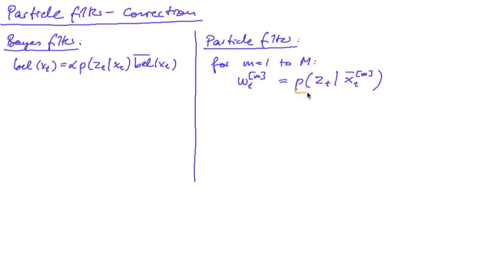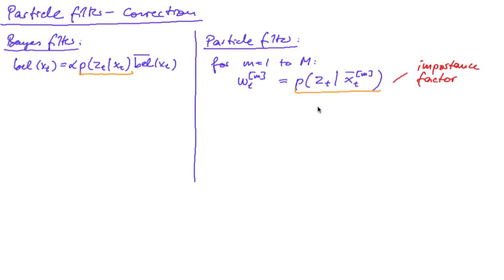The weight is the probability of our measurement given that our state is exactly our predicted particle. This is the same as in the Bayes filter formulation, and this weight is also called the importance factor. After this step, we have computed a weight for each predicted particle. But finally, our distribution has to be represented by particles and not by weighted particles.